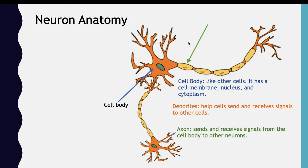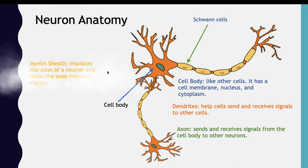This part over here is what we call a Schwann cell — these yellow cells — and you can see the orange nucleus inside them, which is what makes them cells. The Schwann cells make up the myelin sheath, which basically insulates the axon and helps it transmit signals.